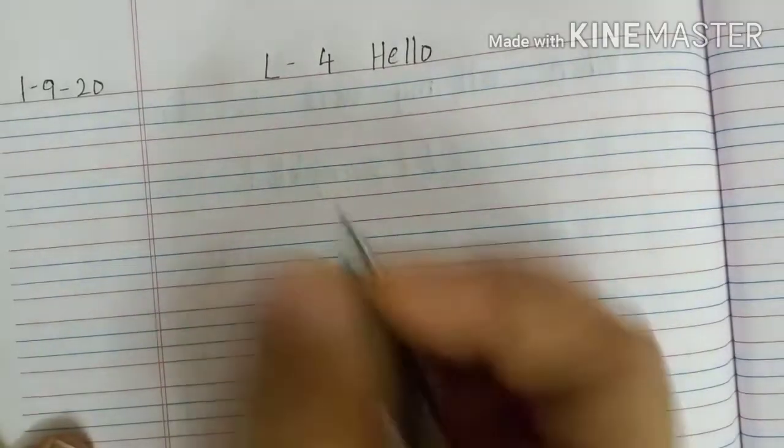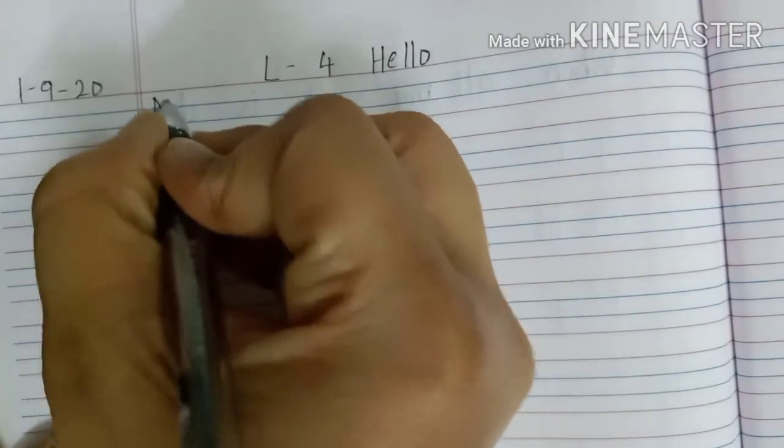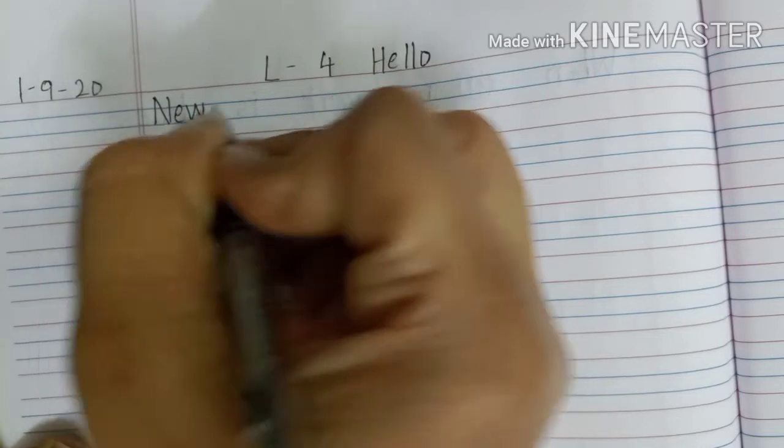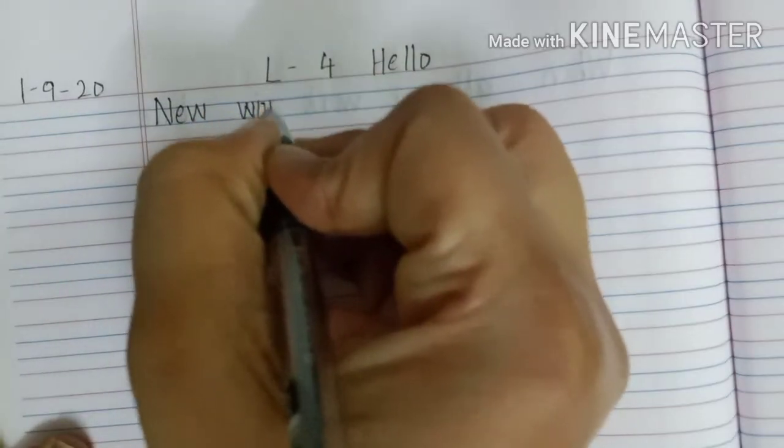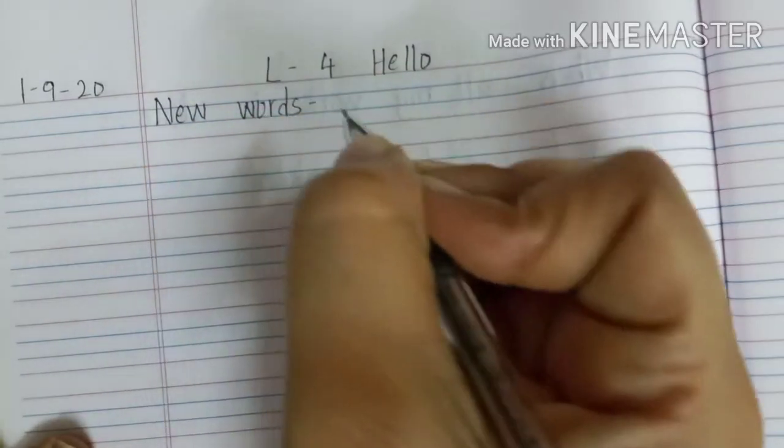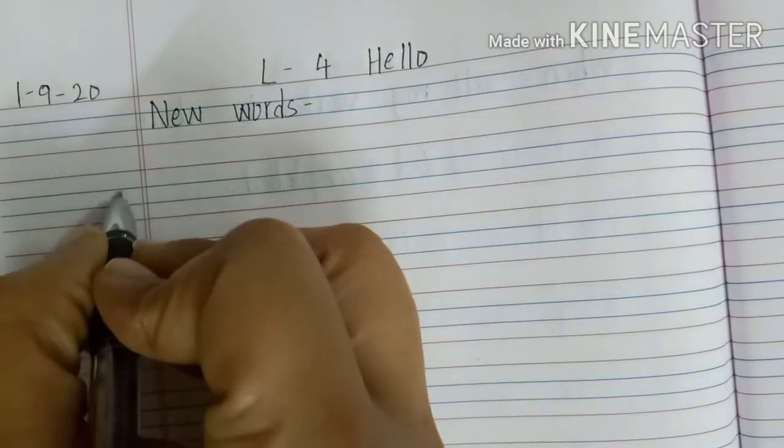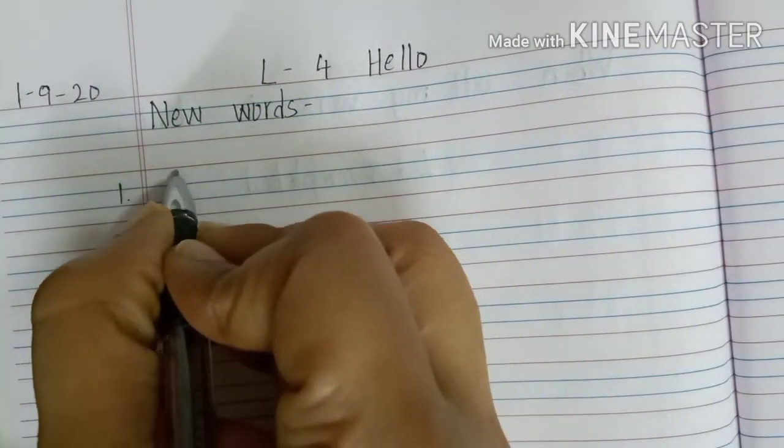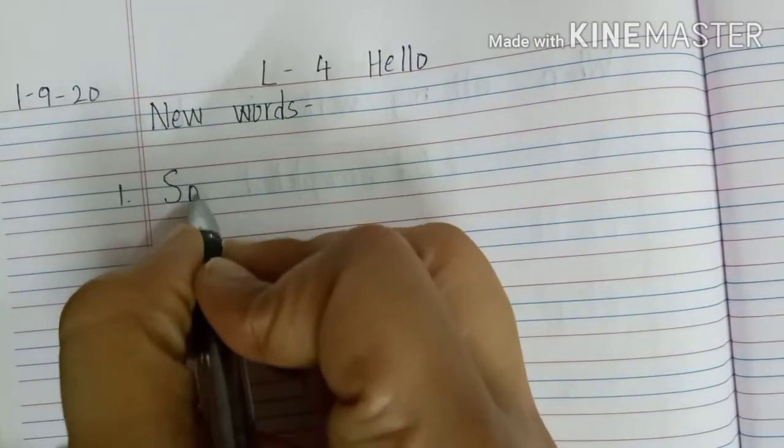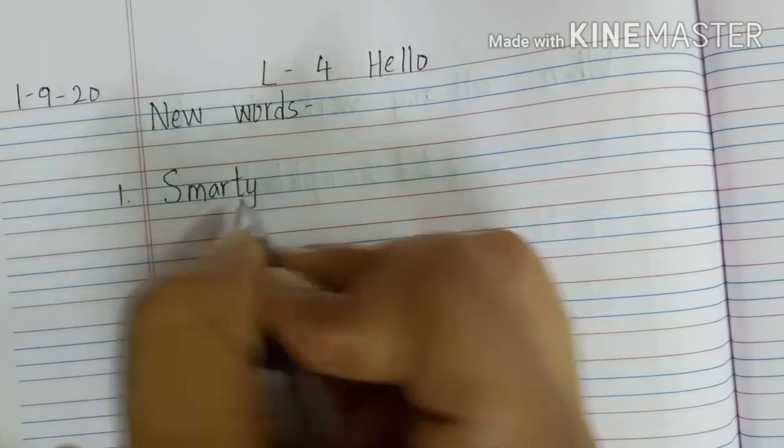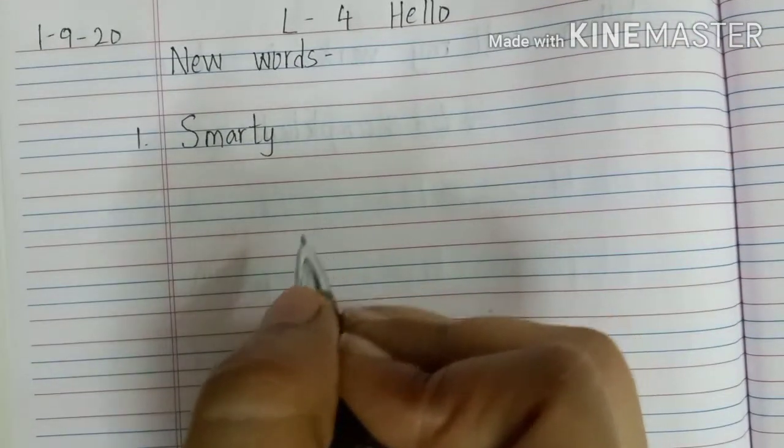Our side heading will be new words. Now, the first one will be, it's the name of a computer. So, we will be writing starting with the capital letter, SMARTY.